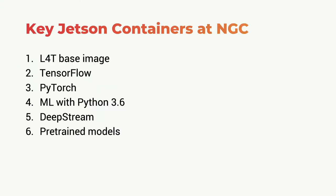NVIDIA has built its own registry called NGC — NVIDIA GPU Cloud — which provides a set of images, pre-trained models, Helm charts, and a collection of reusable assets. One core pillar of NGC is the registry, which has popular images like the L4T base image with core JetPack, TensorFlow, PyTorch, a generic ML container with Python 3.6, a DeepStream container image, and a variety of pre-trained models for emotion detection, pose detection, image classification, and image segmentation.